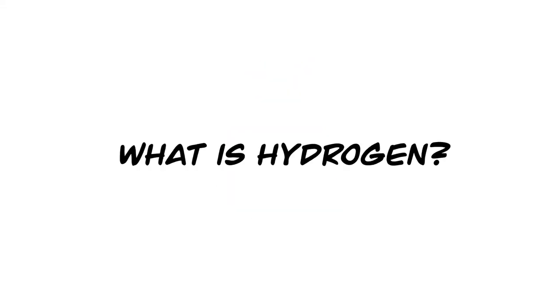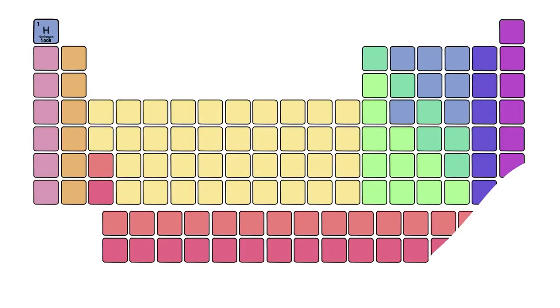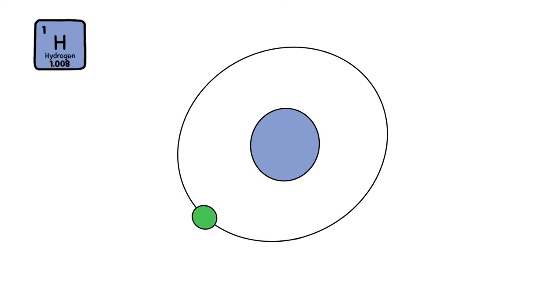What is hydrogen? Hydrogen is the lightest element in the universe. It's at the top of the periodic table and consists of one proton and one electron.